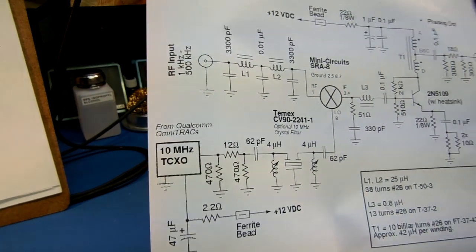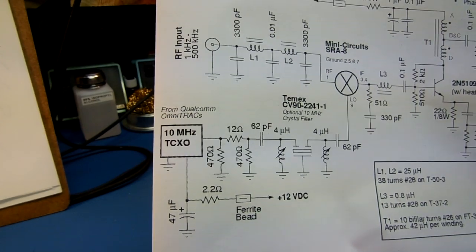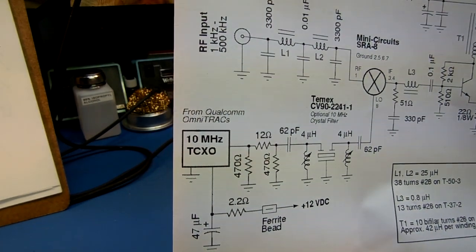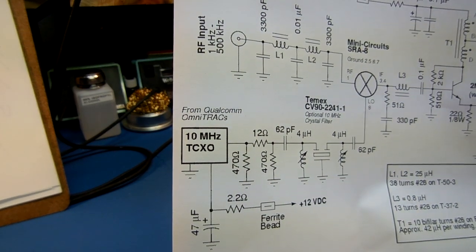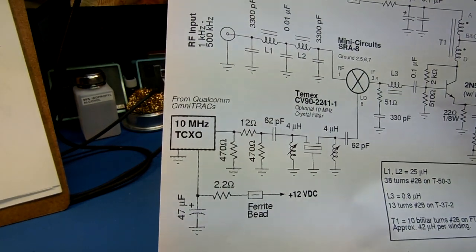The most important part of the converter is the local oscillator. I got lucky and managed to find some 10 MHz temperature compensated crystal oscillators from some old Qualcomm Omnitrax units.